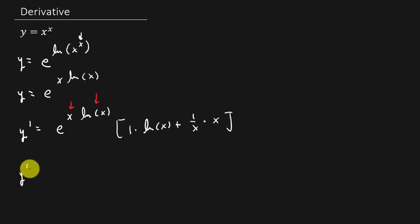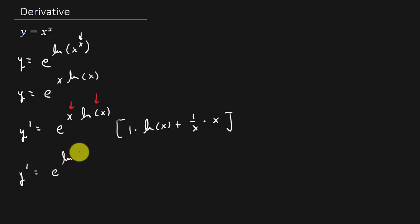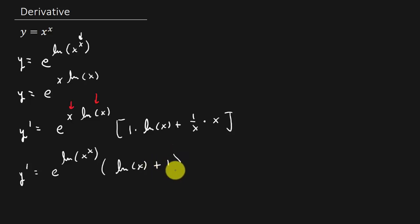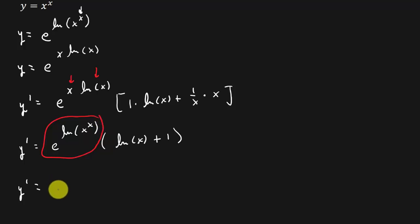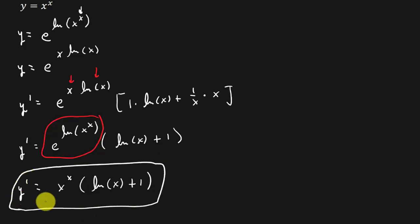Let's clean this up. I'm going to rewrite this as e raised to the natural log of x raised to the x, times the quantity natural log x plus 1. And remember, e raised to the natural log of x to the x is just x raised to the x. So y prime equals x raised to the x times the quantity natural log x plus 1. And there's your answer.